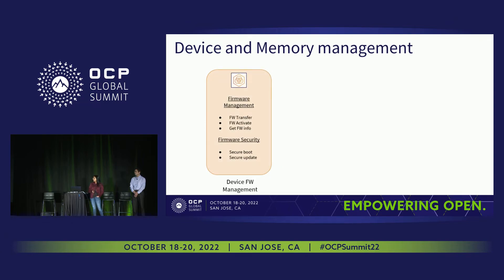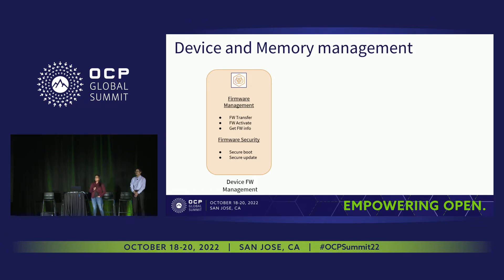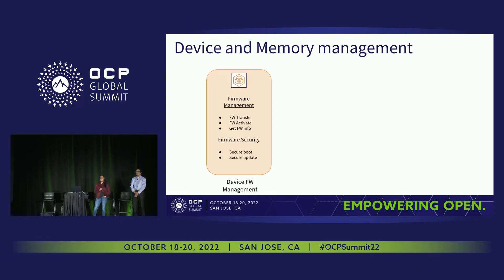The next area is device and memory management. Firmware management is a major piece when introducing new devices into the data center. The CXL spec has already defined well-defined firmware transfer, firmware activate, and get firmware info commands. However, the Linux driver still does not fully support them — there are still limitations. For example, firmware transfer depends on the backend flash device being used and the background operation for each block transferred. For activate, there are two modes specified: firmware activation on cold boot or online firmware activation, but these are still not fully supported in the Linux driver due to security reasons.